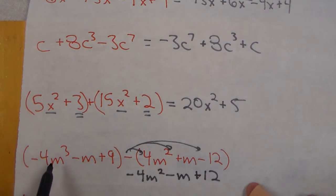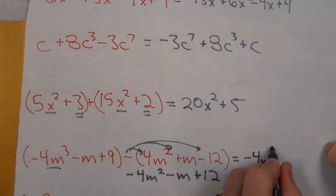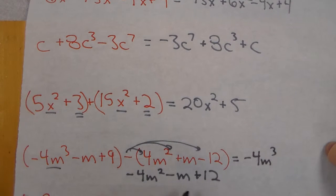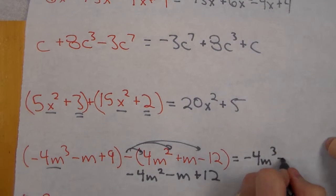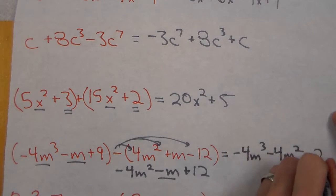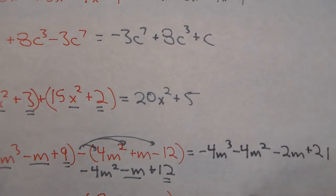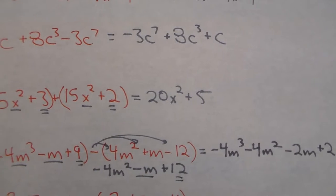So now I can go through and match things. Well I start with the negative 4m³. That is the only one. So that one stays here. Negative 4m squared. That is also the only squared. So that will be here. Negative m and negative m are going to be negative 2m. And last we have 9 and 12 which comes 21. So our answer would be negative 4m³ minus 4m² minus 2m plus 21 in descending order. Everything, all the like terms are combined.